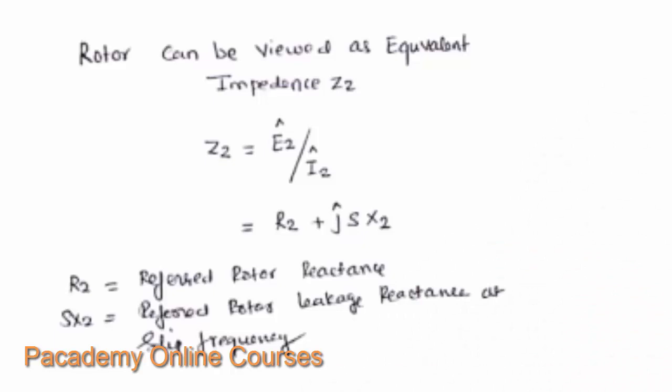The impedance of the rotor can be written as Z2 = E2 / I2, which equals the EMF induced in the rotor divided by the rotor current, summarized as R2 + jSX2.